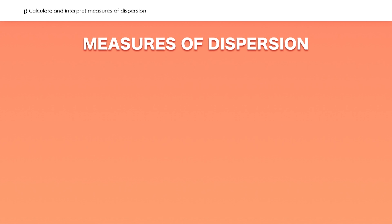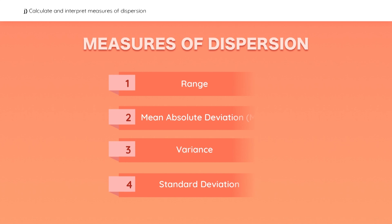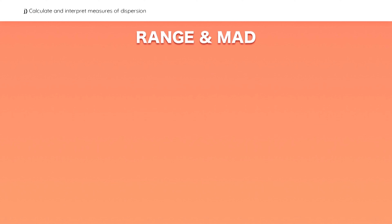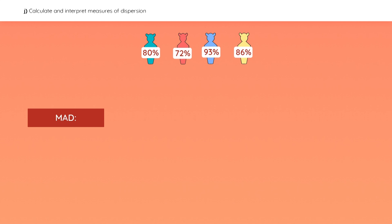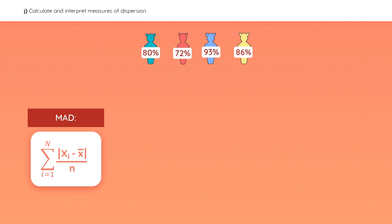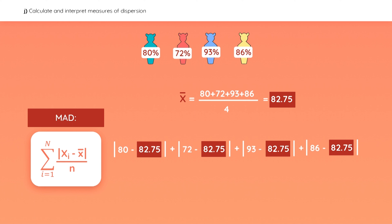Moving on to measures of dispersion, which tell us how spread out the data is. The range is simply the maximum value minus the minimum value — in this case, 21. For the mean absolute deviation, first find the arithmetic mean, then take the sum of each observation's absolute difference from the mean, and divide by n, the number of observations. You should get 6.75 as your answer for this example.